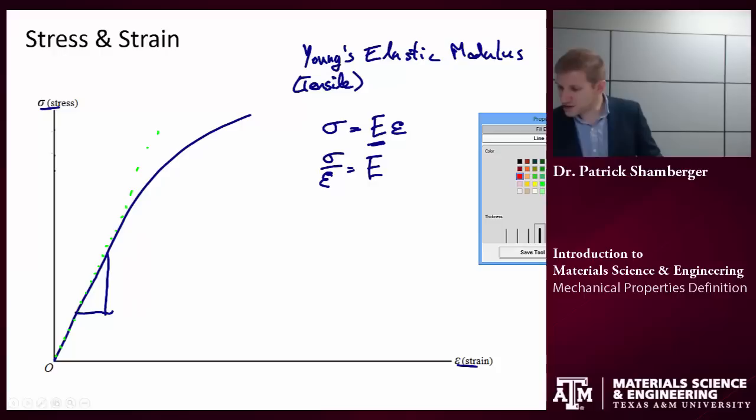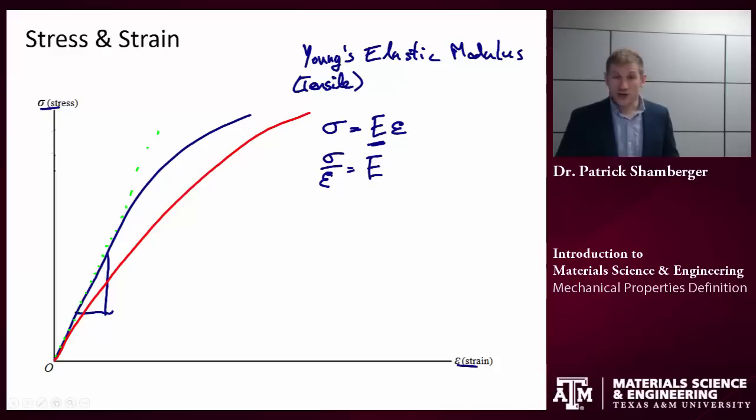Now, again, remember materials are not always perfect. And so, in some cases, we might have something which is elastic. It behaves elastically, so it's totally recoverable, but it's not perfectly linear. So, in this case, if I applied some stress, I could come up here, but I could still recover all of that strain upon removing the stress. So, it's not linear, so how do we find a slope for it?